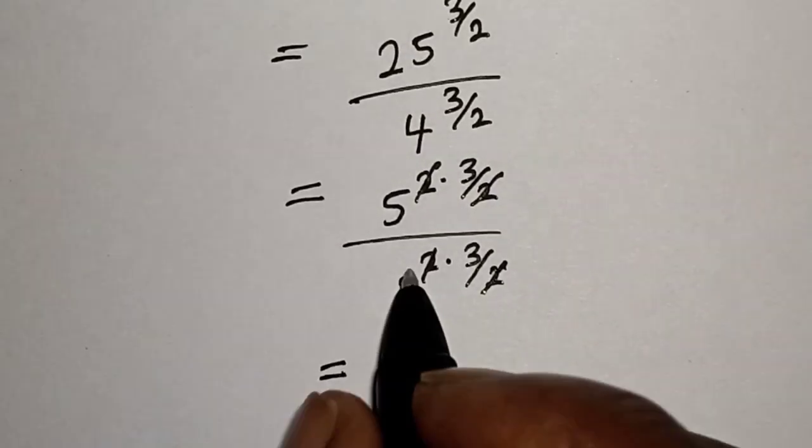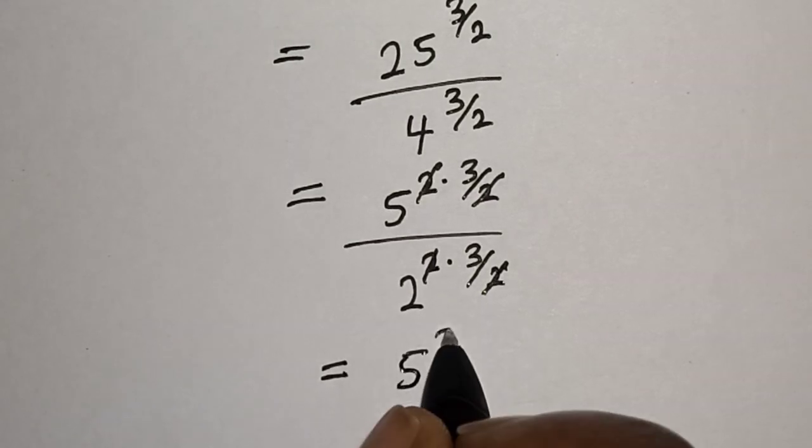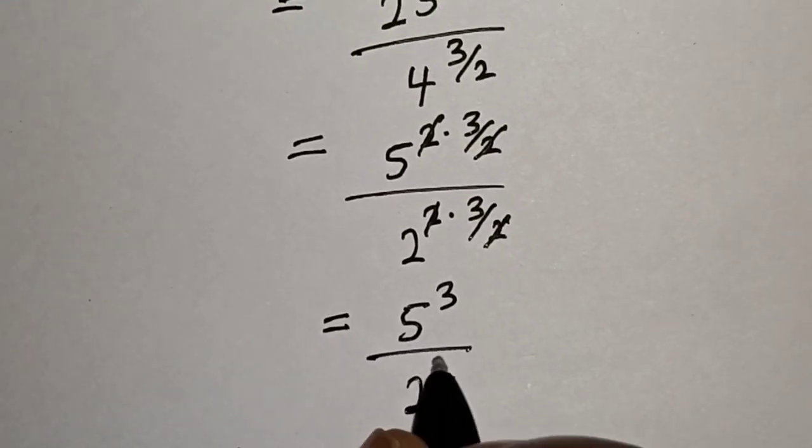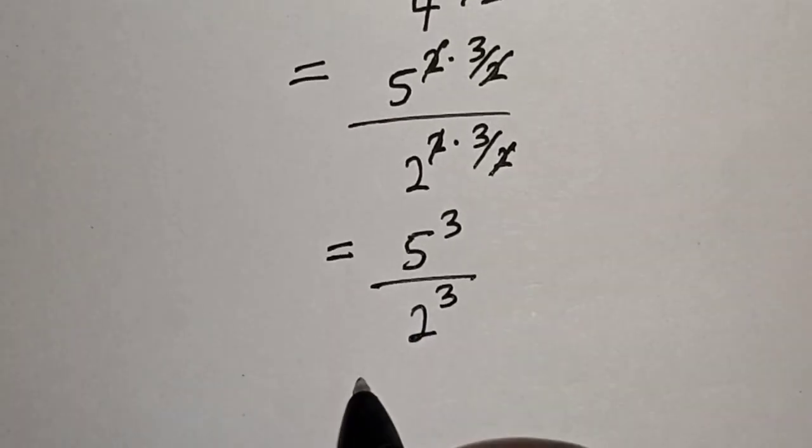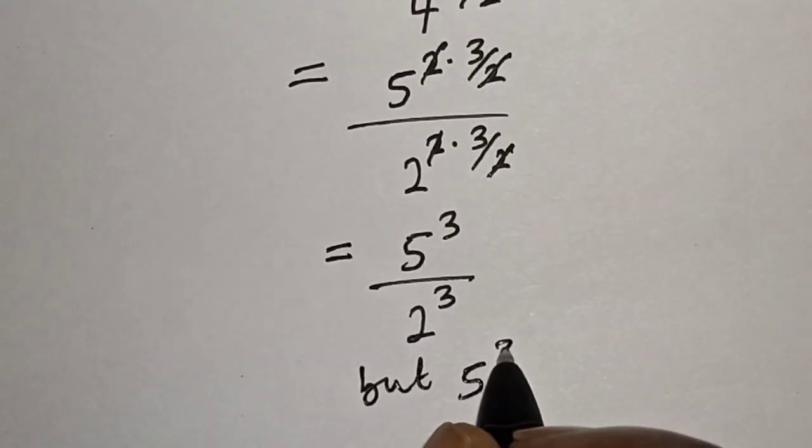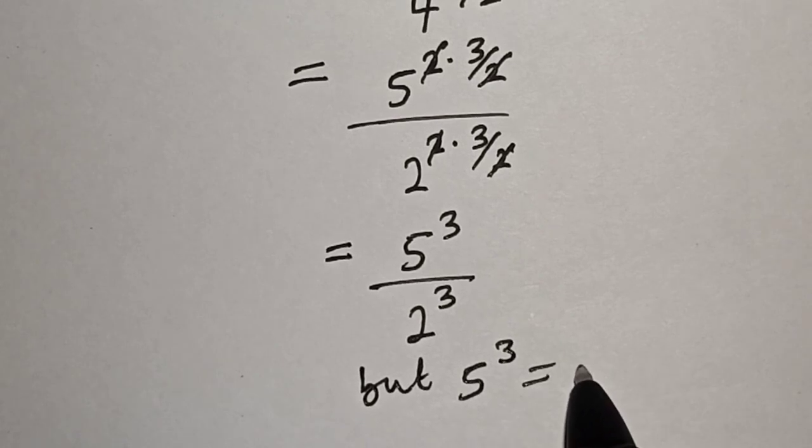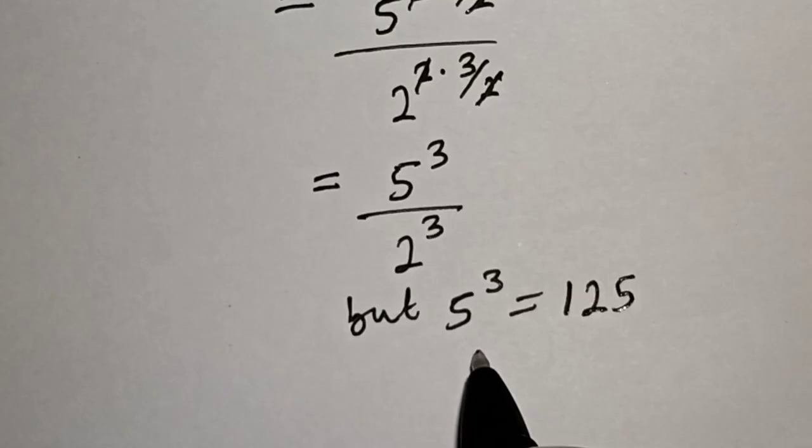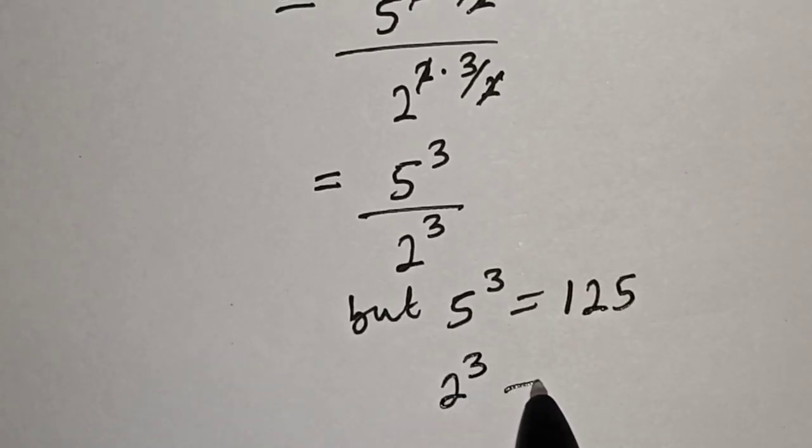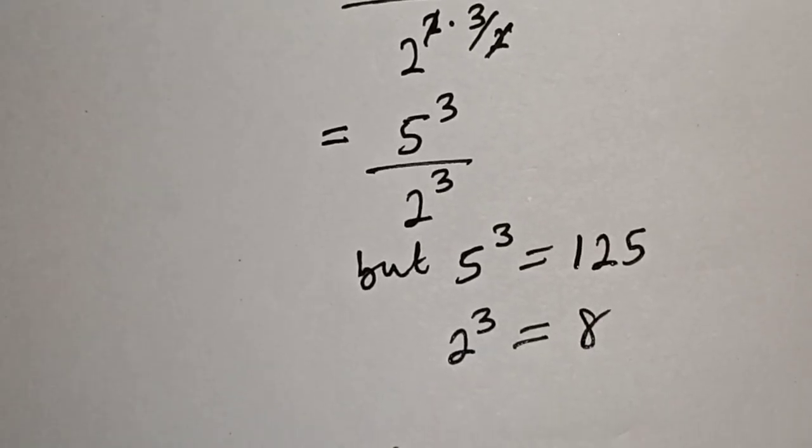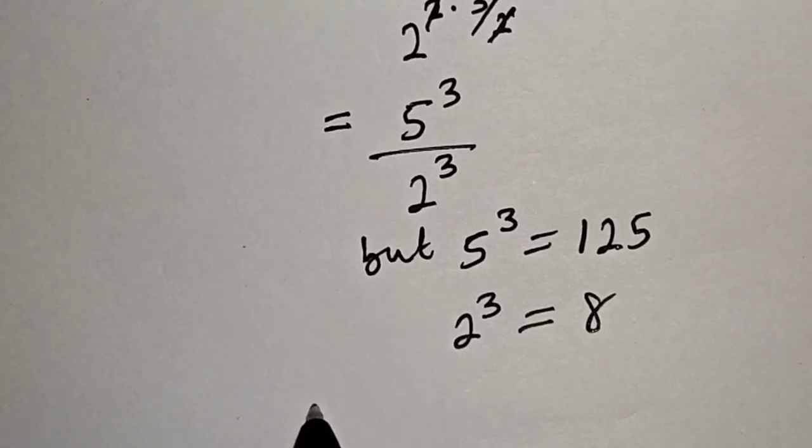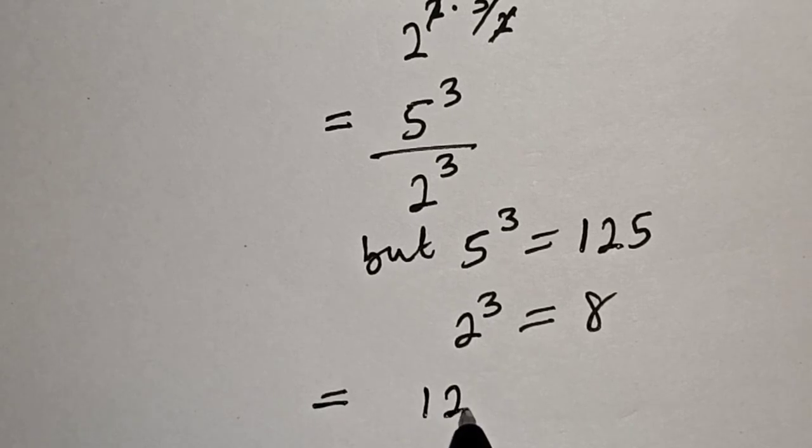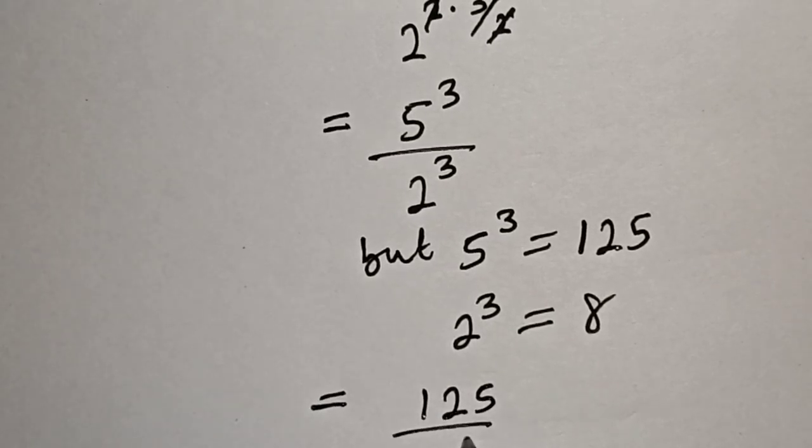This is equal to 5 raised to the power of 3, divided by 2 raised to the power of 3. 5 raised to the power of 3 is equal to 125, and 2 raised to the power of 3 is equal to 8. Therefore, we have the final answer, which is 125 over 8.